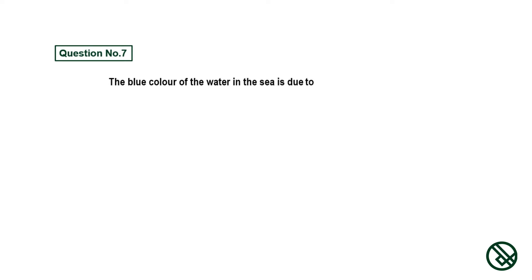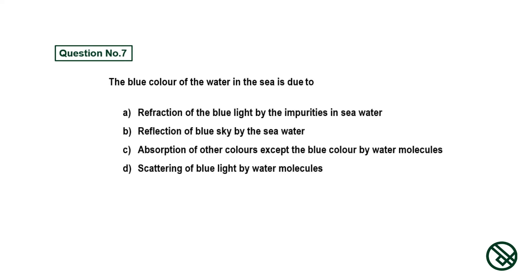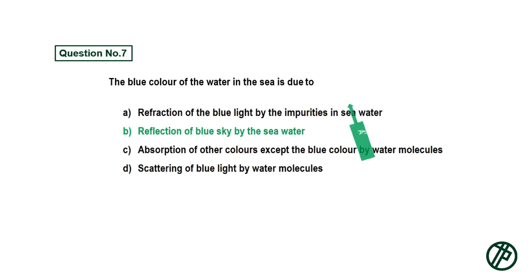Question number seven: The blue color of the water in the sea is due to — option A: refraction of blue light by impurities in sea water, option B: reflection of blue sky by the sea water, option C: absorption of other colors except blue color by water molecules, option D: scattering of blue light by water molecules. Answer is option B: reflection of blue sky by the sea water.